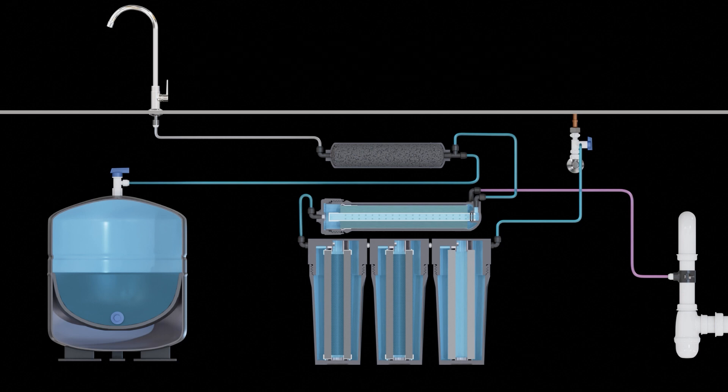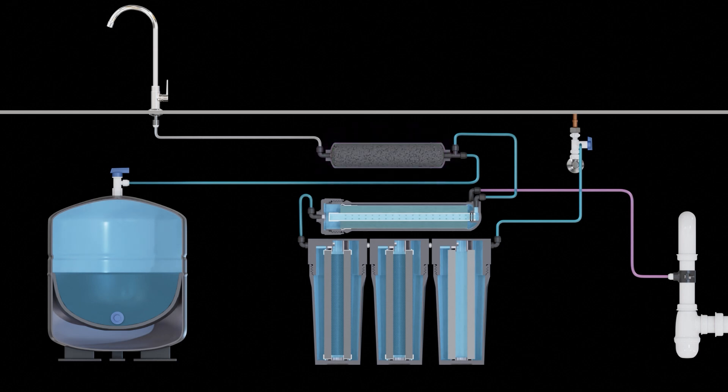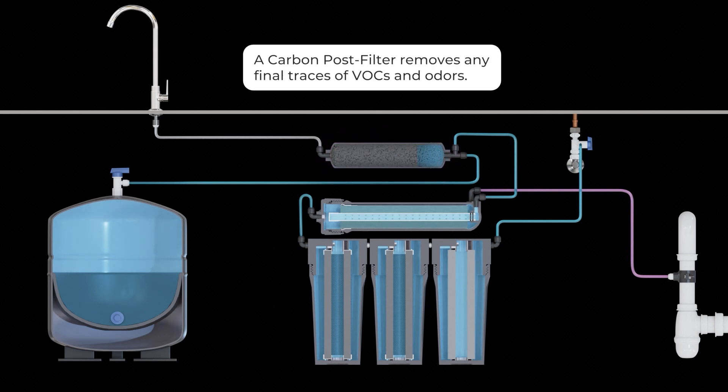Before going through the faucet, there is one more filter through which the water must pass. This filter is usually on top of the reverse osmosis membrane, and it's a carbon post filter that removes any final traces of VOCs and odors.